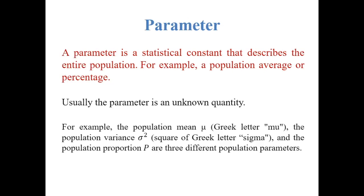A parameter is a statistical constant that describes the entire population. For example, a population average or percentage. Usually, the parameter is an unknown quantity. For example, population mean, denoted by mu; population variance, denoted by sigma square; and population proportion, denoted by capital P.